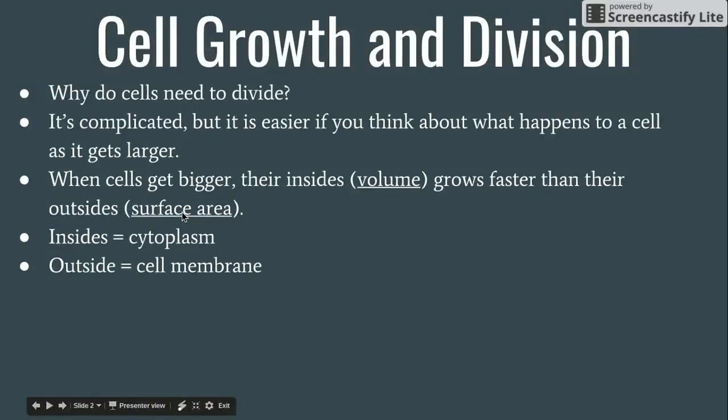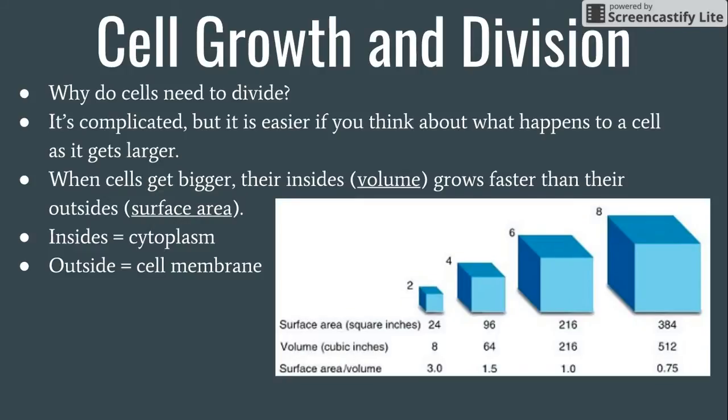And if you remember from last chapter, everything that gets transported out of the cell gets transported through the cell membrane. The cytoplasm is where all the cell waste products and energy and food and things like that are stored. So an easy way to think about this is to think about them in terms of cubes. The nice thing about a cube as opposed to an actual cell is that it has equal sides. So you can imagine what happens as cells get larger.